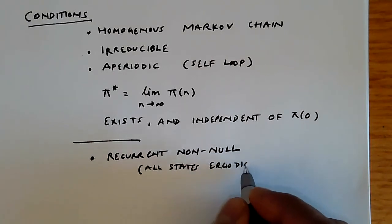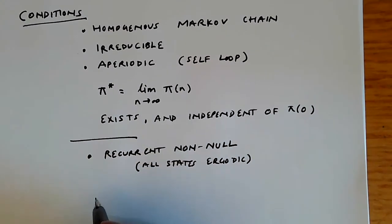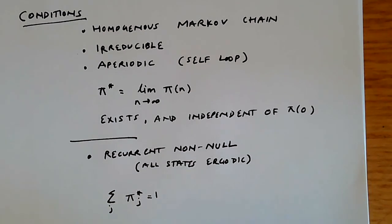Then we have an even nicer condition. Then we can say that these conditions hold, sum over j, pi star j equals 1. Now, this is, of course, going to be true trivially because this means that the probability of being in one of the states j is going to be 1, that's going to be true anyway.